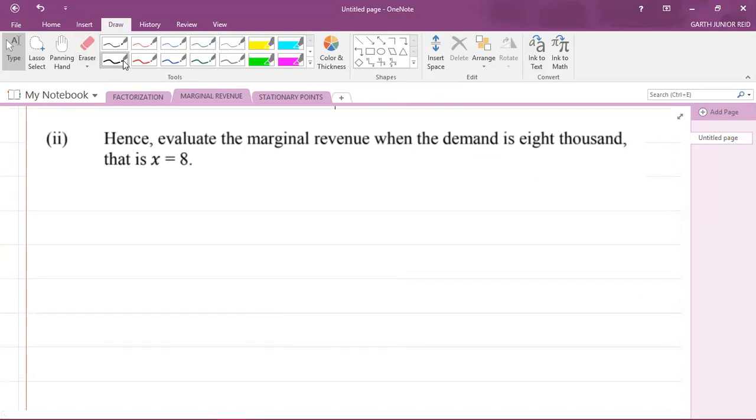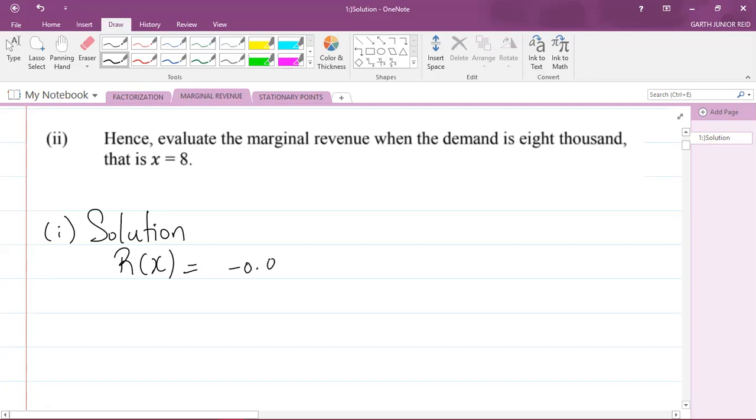Let us do part one, which says that we are to find R'(x). This is part one solution. So we're given R(x) as negative 0.008x cubed plus 0.24x squared plus 0.6x. I'm going to differentiate this now, so I'll look at R'(x). I'm going to differentiate this using the power rule of differentiation.